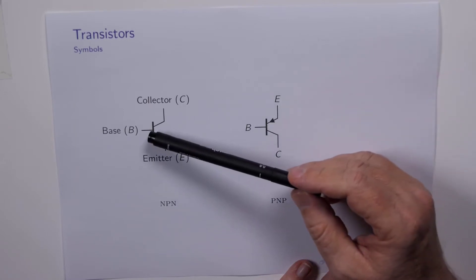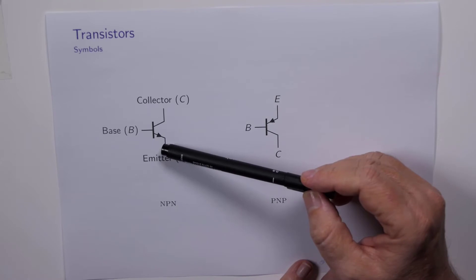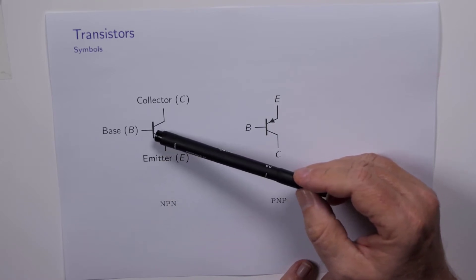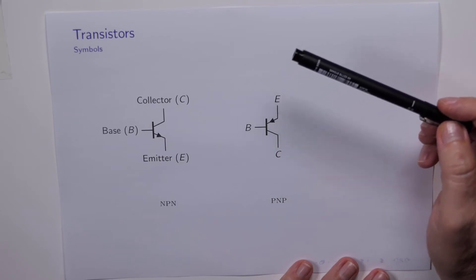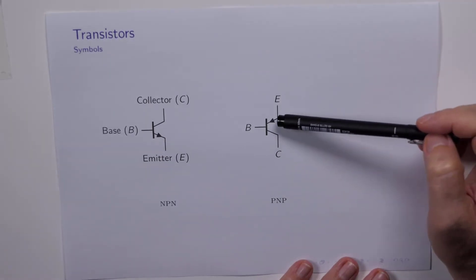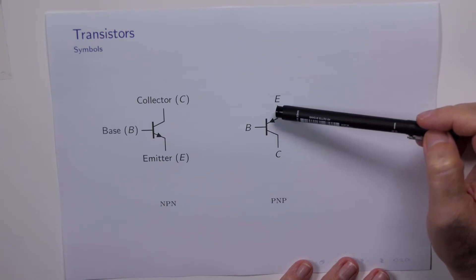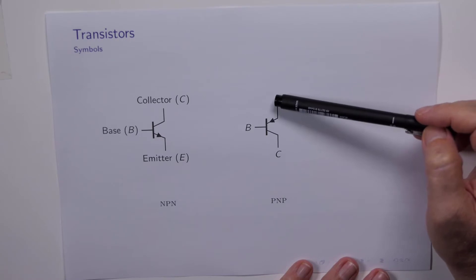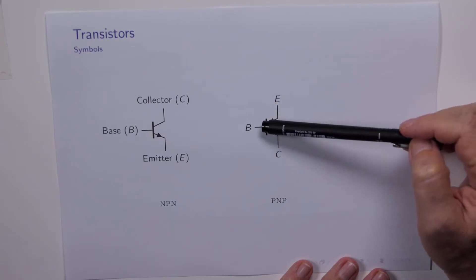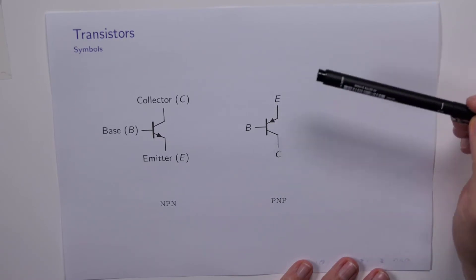The arrow points in the direction of conventional current flow, so for the NPN transistor that's coming out of the emitter. Similarly with the PNP device, the arrow points in the direction of conventional current flow, so current flows into the emitter terminal, out of the base and out of the collector.